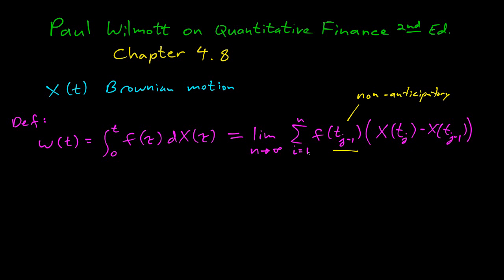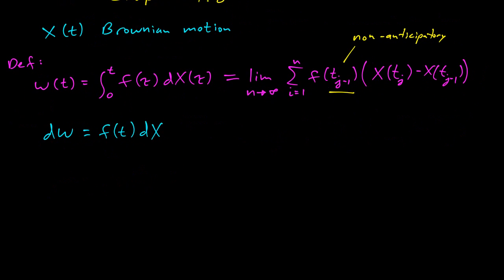So here's the definition. This is a little bit unwieldy, so there's actually a nice shorthand. So the shorthand is dW = f(t)dx. And you can see here, we're just taking the derivative of both sides, so nothing too surprising.